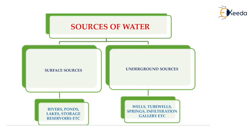We will start with the first chapter: sources of water and water demand, and the topic is sources of water. Now there are two sources of water — the first one is the surface source and the second one is underground sources. The water which is flowing on the surface of the earth is known as surface sources.